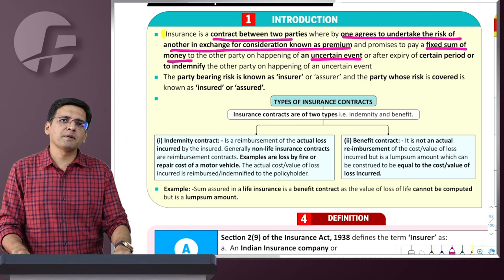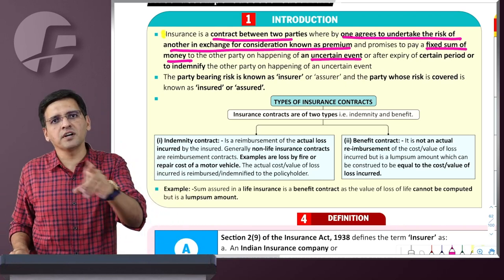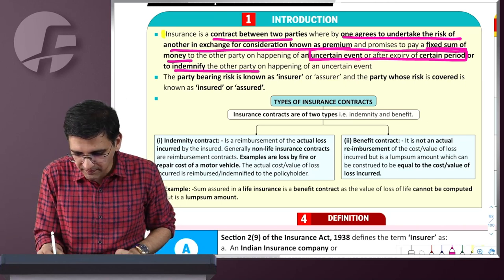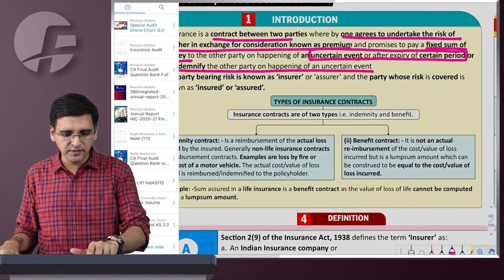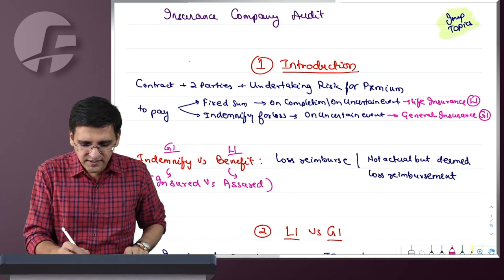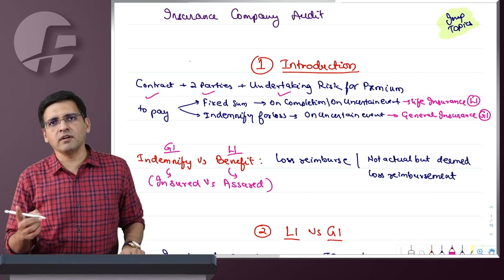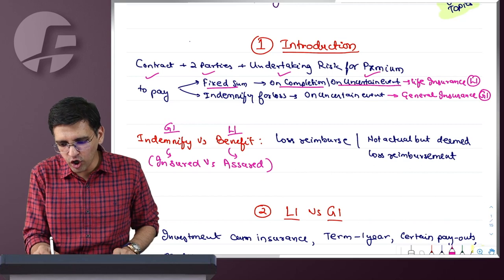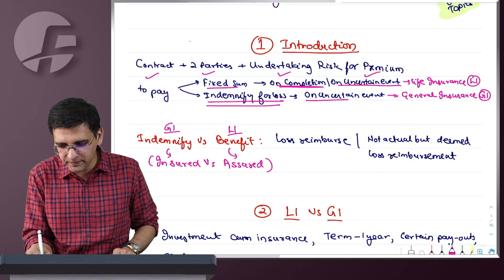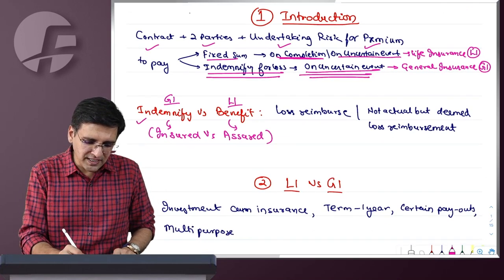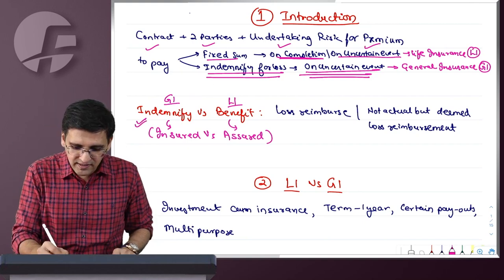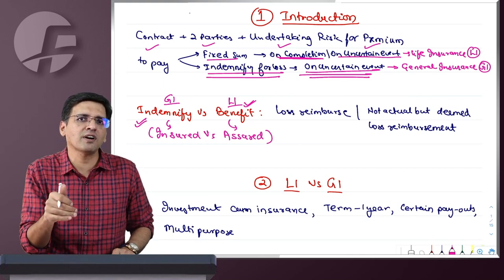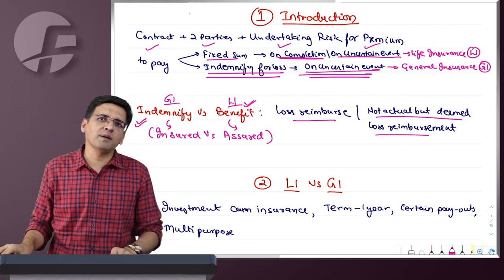In the case of LIC, there is a maturity payment on the other party. So you can write: 'or after expiry of certain period.' Or, to indemnify the other party on happening of an uncertain event — this is the general insurance case. We can simply say it is a contract between two parties, where one party undertakes risk of the other party for consideration of premium — to pay a fixed sum on happening of an uncertain event or on completion of term, or to indemnify for loss. General insurance is an indemnity contract because you are reimbursing the loss, whereas life insurance is a benefit contract because there you are determining a deemed loss and giving that amount which is not actually a reimbursement of the loss.